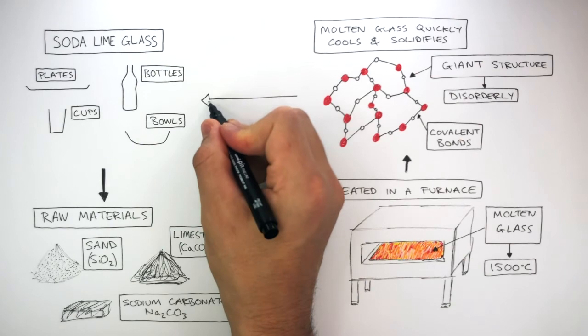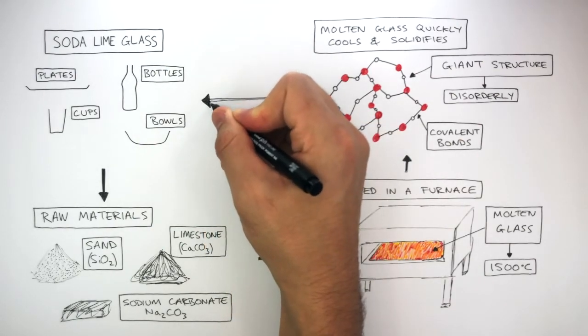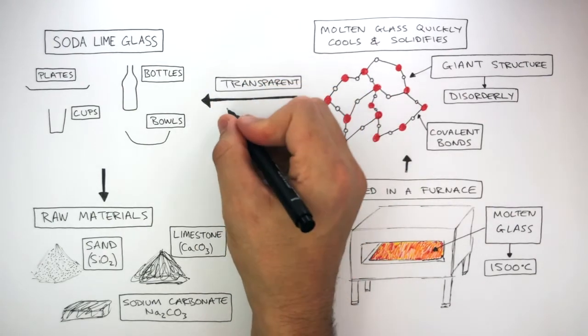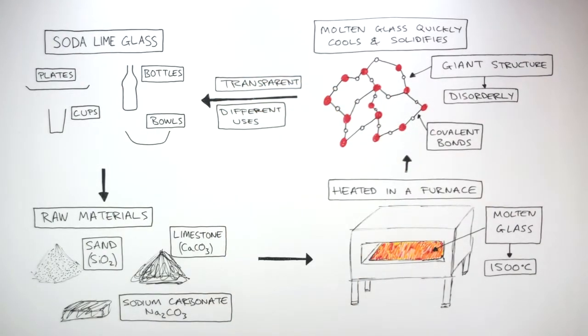Because the molten glass has quickly cooled and solidified, this means the glass is transparent. So the soda-lime glass has many different uses, as has already been stated at the beginning of the video.